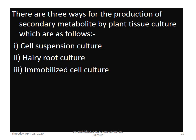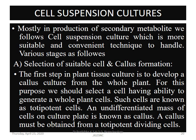There are three ways of producing secondary metabolites through plant tissue culture: cell suspension culture, hairy root culture, and immobilized cell culture. Cell suspension cultures are mostly used in the production of secondary metabolites as they are a more suitable and convenient technique to handle.